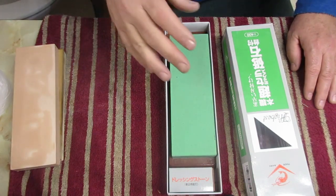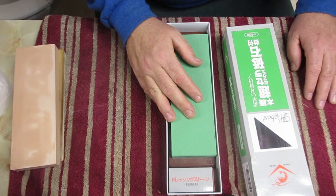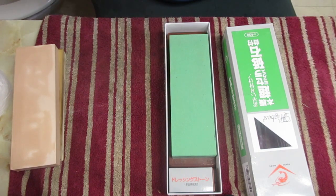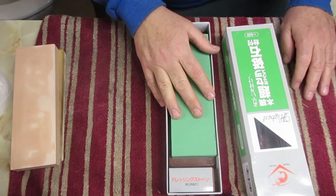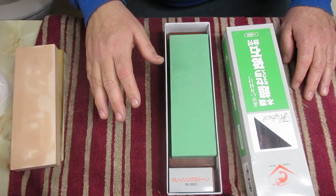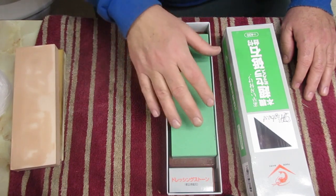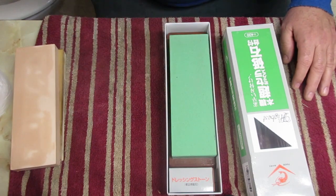Hello there. This is a Naniwa Chosera 400 grit stone. I received this, a 4K Hayabusa, and a 1K Chosera as Christmas gifts.